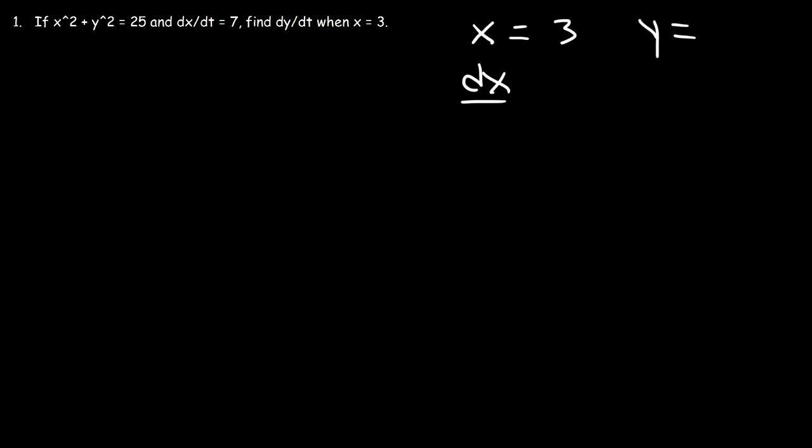Now, we have the value of dx dt. That tells you how fast the variable x is changing with respect to time. So that's positive 7. If it's positive, that means that x is increasing with respect to time at this instant. Our goal is to find dy dt.